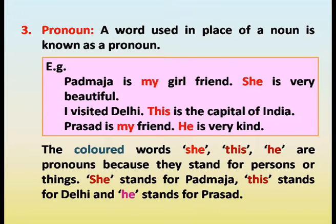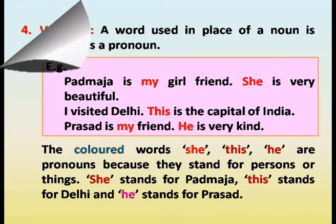Pronoun. A word used in place of nouns is known as a pronoun. Padmaja is my girlfriend. She is very beautiful. I visited Delhi. This is the capital of India. Prasad is my friend. He is very kind. The colored words she, this, and he are pronouns because they stand for persons or things. She stands for Padmaja. This stands for Delhi. And he stands for Prasad.